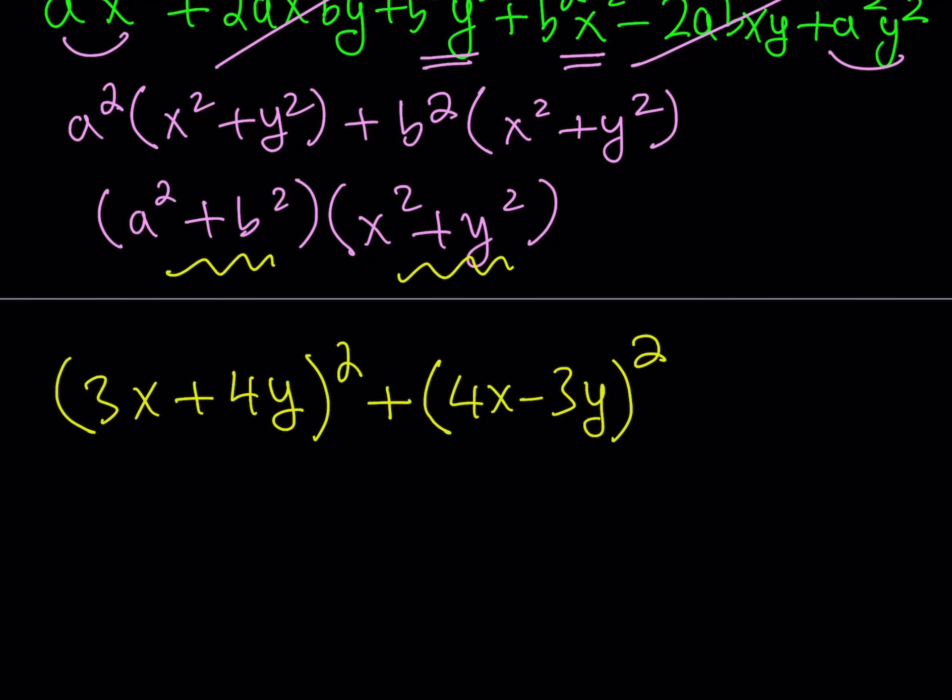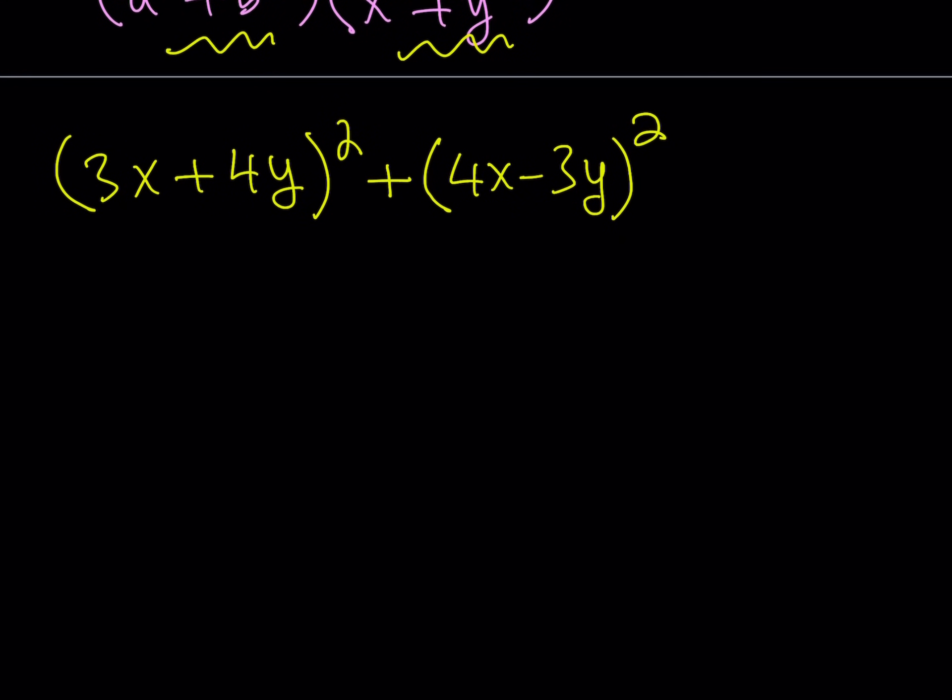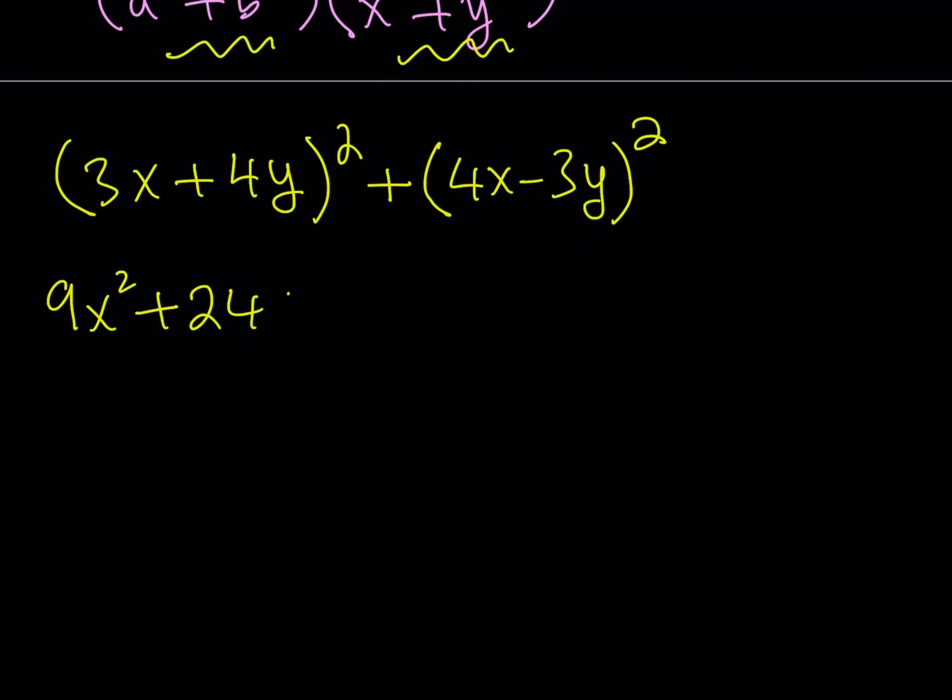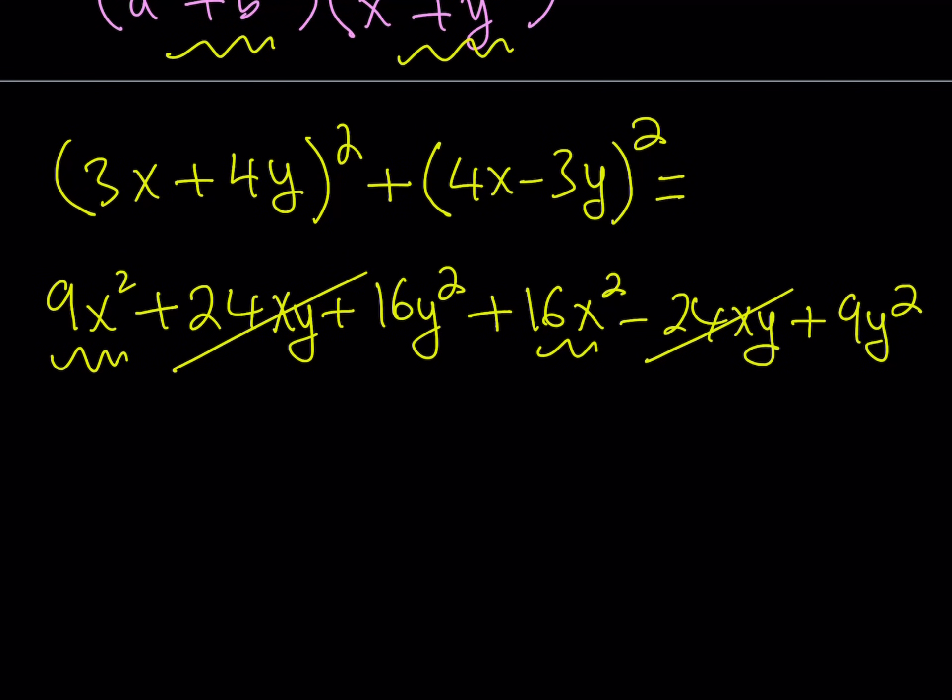So, if you don't remember what this looks like, you can just go out and expand it, and see what it's going to become. So, this is going to be 9x² plus 24xy plus 16y², and to that, I'm going to be adding 4x minus 3y quantity squared, which is going to be 16x² minus 24xy plus 9y². And as you know, these terms are going to cancel out. And that's going to leave us with something nice. And I'm just going to write that here. Because notice that here, we're adding 9x² and 16x², so that's going to give us 25x², which is cool, right? And then, we have 16y² plus 9y², which is going to give us 25y². Awesome.